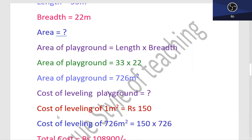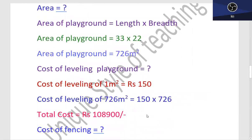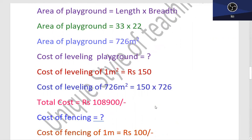You will find the cost of leveling playground. The total area which we want to level is 726 meter square. Cost of leveling 1 meter square is rupees 150. Cost of leveling 726 meter square equals 150 into 726. When we do multiplication, we will find the answer that is 108,900.